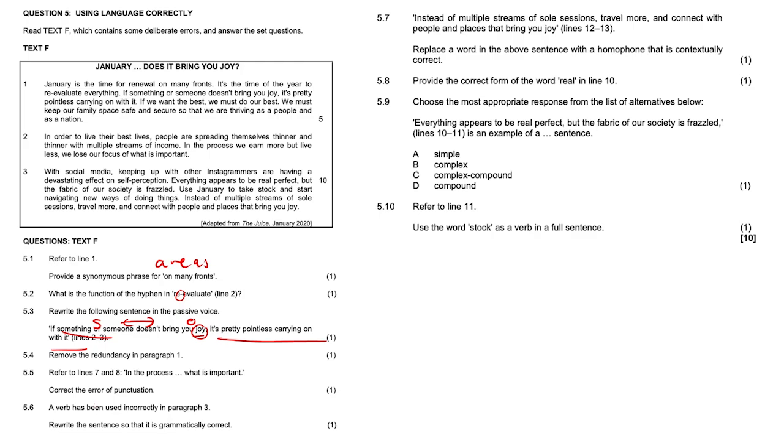5.4, remove the redundancy in paragraph one. To be honest, there were two, safe and secure and people and nation. Either go safe or the word secure. Safe and secure, that is tautological. We're just going to go with safe. Thriving as people would have been fine, or thriving as a nation. So there was a double tautology here. You could have picked either.